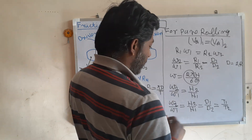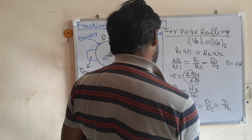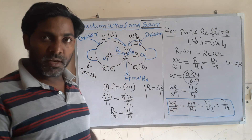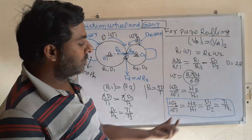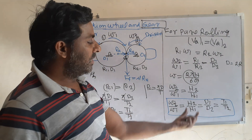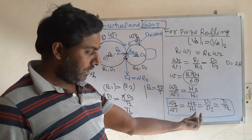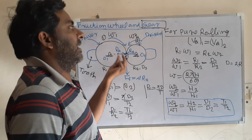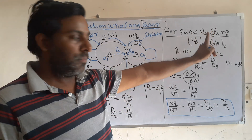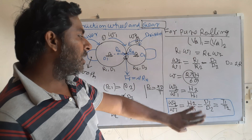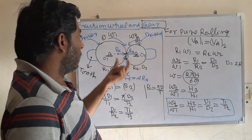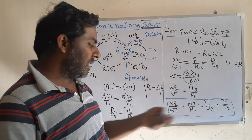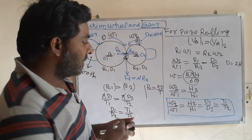This is a very important kinematic relation. It can be applied for any kind of gearing, and also for friction wheels under the condition of pure rolling. So for friction wheels with pure rolling, and for any kind of gearing, we can apply this kinematic relation.